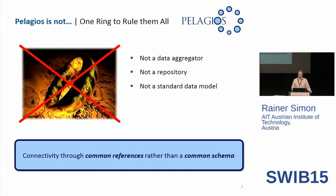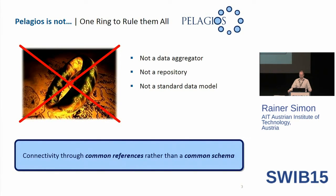It also makes sense to speak about what Pelagios is not. Pelagios is not a data aggregator — we don't go to our partners and say give us all your data and we'll host it. We're not a repository and we're not a standard data model, so we don't mandate a single data model which everybody should adhere to. So what are we doing? We've given it the name of connectivity through common references rather than a common schema.